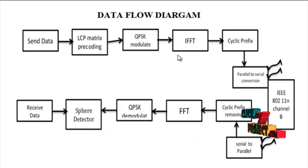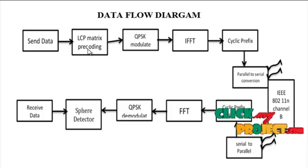Let me discuss the flow diagram for our process. Initially, the data are transmitted to the encoding section where LCP matrix precoding is used.